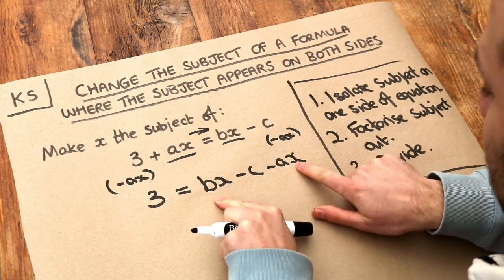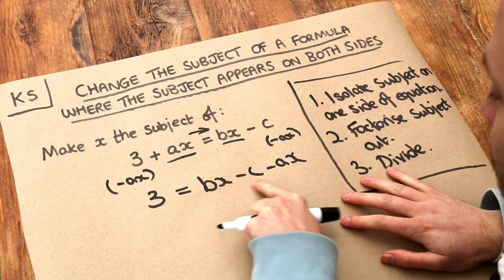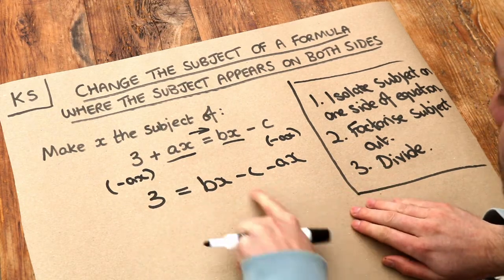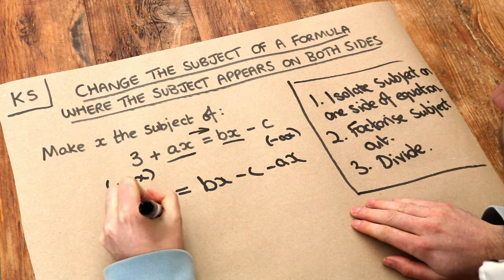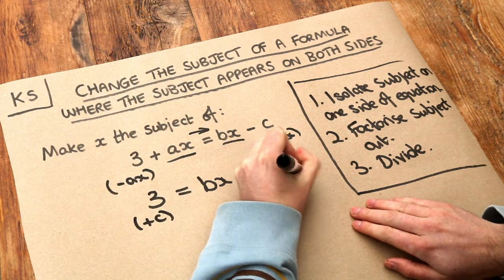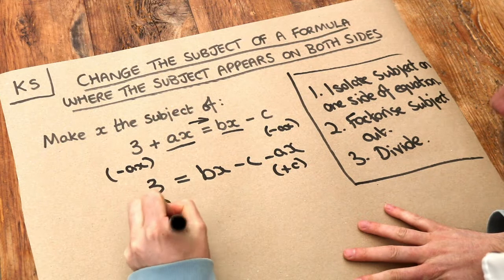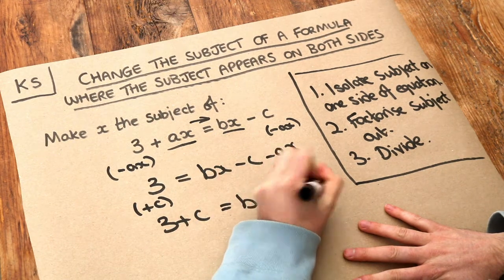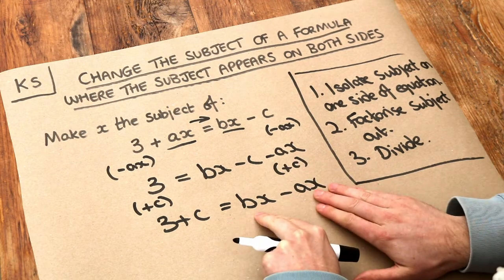Now we've got all the x terms on one side of the equation but this is not an x term. So anything that's not an x term should go on the other side of the equation. We're just going to add c to both sides to get rid of that minus c. If you do that we get 3 plus c equals bx minus ax. Now on the right hand side of the equation we've only got x terms now. Nothing else.